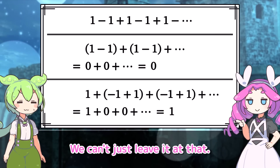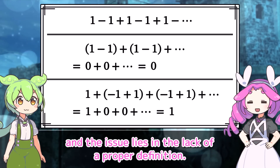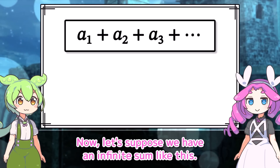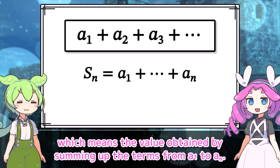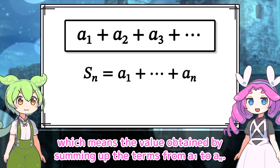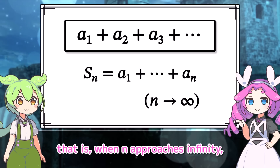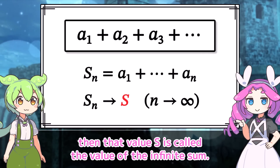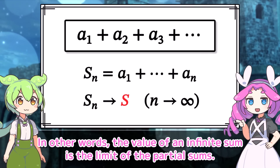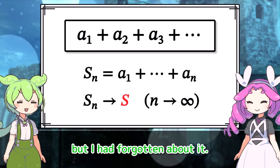Hold on — we can't just leave it at that. Let's properly think about what happened. This problem is related to the value of series, or an infinite sum, and the issue lies in the lack of a proper definition. Let's suppose we have an infinite sum like this. To calculate its value, first consider the partial sum up to the nth term — the value obtained by summing up the terms from a₁ to aₙ. When n approaches infinity and the partial sum gets closer and closer to a value s, then that value s is called the value of the infinite sum. In other words, the value of an infinite sum is the limit of the partial sums. I think I remember something like that, but I had forgotten about it.